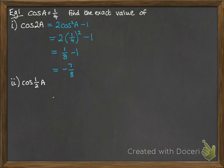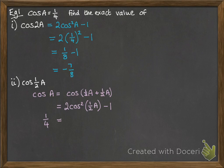So what if we have something like this, cos of half a? Now half a, you can think about in terms like this. So cos of a would be made up of cos(half a) plus half a. So then we can use the fact that that would be 2cos²(half a) minus 1. And then we can rearrange that to work out cos of half a.